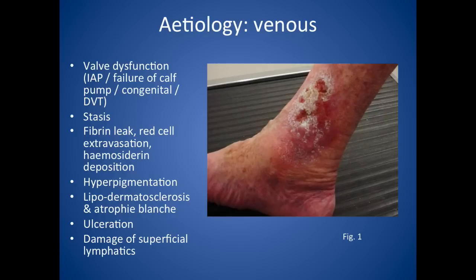With venous leg ulcers, you usually have valve dysfunction of the veins. This can be due to increased intra-abdominal pressure, failure of the calf pumps, congenital varicose veins, or people who've had DVTs before are also more prone. What happens is you get stasis of the blood, so fluid leaks out of the veins under the skin. With that, you get fibrin leak, red cell extravasation, and haemosiderin deposition.